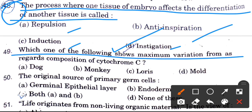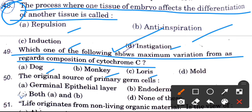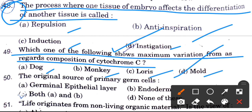Which one of the following shows maximum variation from regard to composition of cytochrome C? Options are dog, monkey, Loris, and mold. The answer is mold.